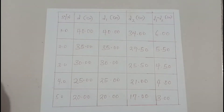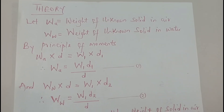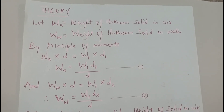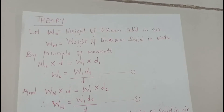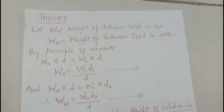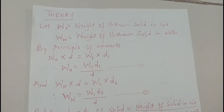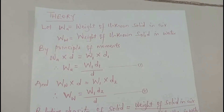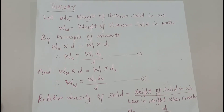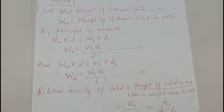The slope of that graph gives us the relative density of the solid. Here is the theory: if I call the weight of the unknown solid in air Wa, and the weight in water as Ww, then using the principle of moments — clockwise turning moment equals anti-clockwise turning moment — I get: Wa × d = W1 × d1. Making Wa the subject gives Wa = (W1 × d1) / d. That is equation one.